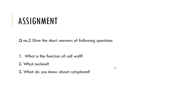Short answer questions. Question 1: what is the function of cell wall? It provides support and gives a proper shape to the cell. Question 2: what is the nucleus? It is the most important part of a cell and it controls all the activities of the cell. Question 3: what do you know about cytoplasm? It is a jelly-like material which is present inside the cell membrane. Many small organelles are present in cytoplasm and most of the functions of a cell take place in cytoplasm.